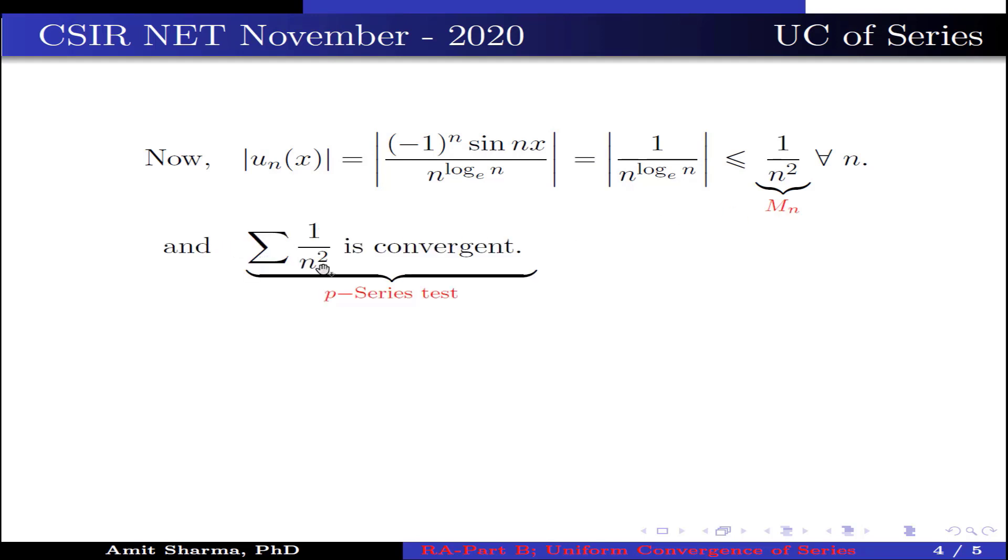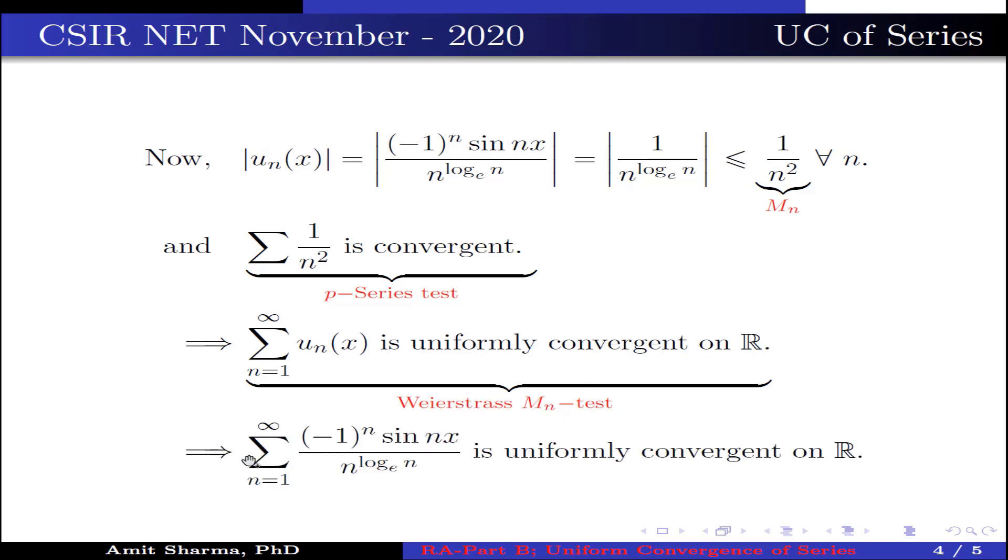Now the series 1 over n squared is convergent by using p-series test. This implies the series n varies from 1 to infinity u_n(x) is uniformly convergent on R by Weierstrass M_n test. This implies the series n varies from 1 to infinity minus 1 to the power n sin nx divided by n to the power log n is uniformly convergent on R.